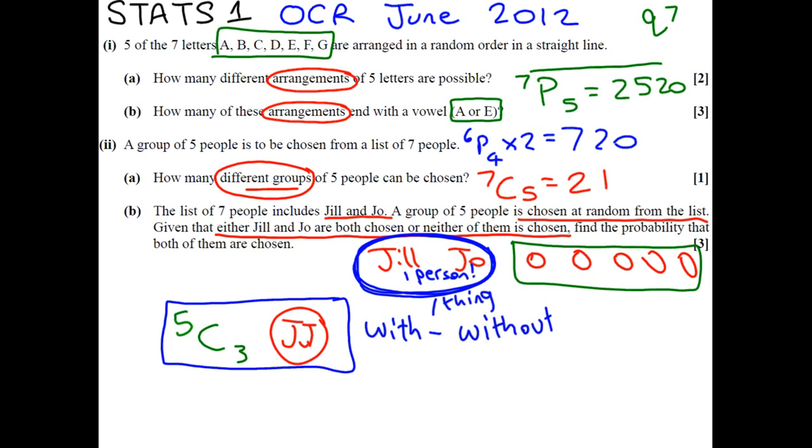If you do 5 choose 3 on your calculator, you're going to get 10. And let's think about if we do not pick JJ, aka Jill and Joe. Now, if we do not pick Jill and Joe,